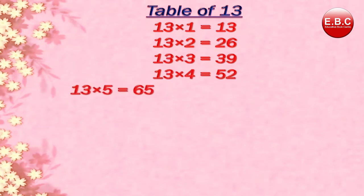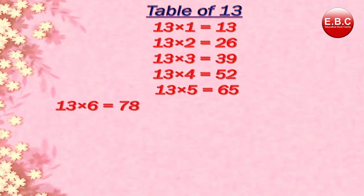13 5s are 65. 13 6s are 78. 13 7s are 91.